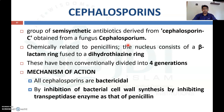Cephalosporins are a group of semi-synthetic antibiotics derived from cephalosporin C, which is obtained from a fungus called Cephalosporium. Chemically, they are related to penicillin and consist of a beta-lactam ring fused with a dihydrothiazine ring. Conventionally, cephalosporins are divided into four generations.